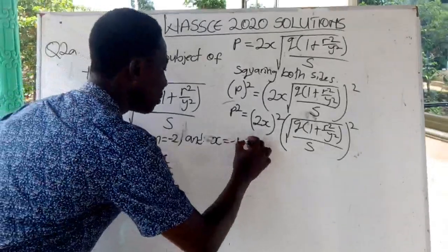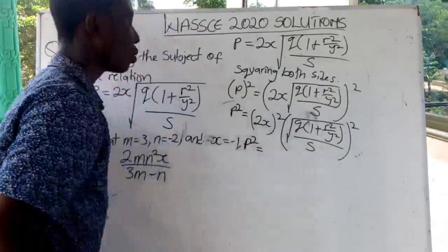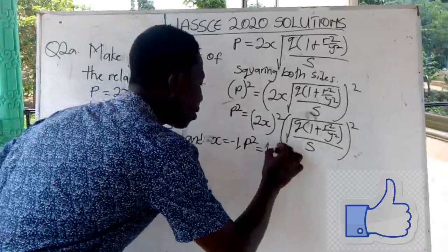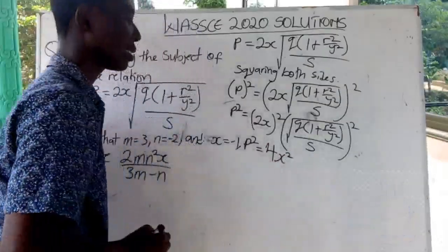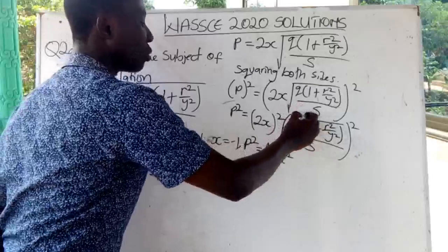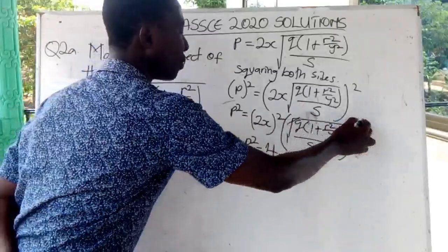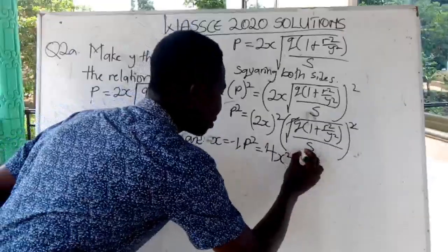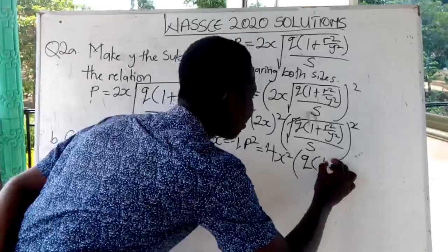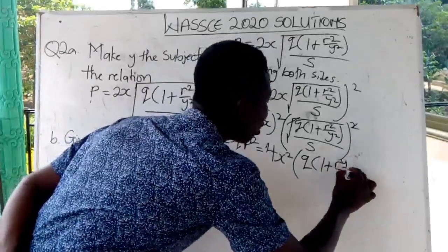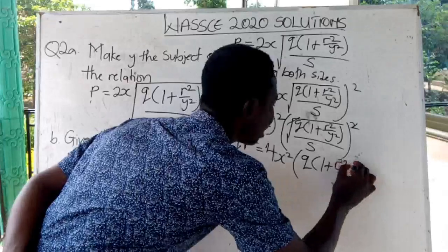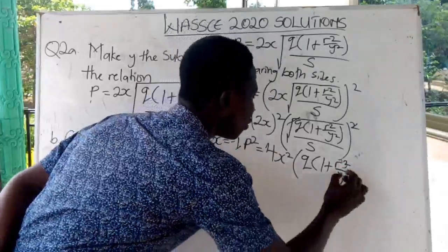We are going to get P squared is equal to 2x squared, giving us 4s squared. Then this square will go into the square root, so it will cancel with it, and we are left with Q into one plus r squared all over y squared.